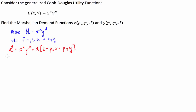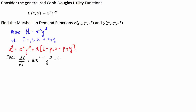So let's start with our first order conditions. The first order conditions are that the partial derivatives of the Lagrangian function equal zero. The derivative of the Lagrangian with respect to X is equal to alpha times X to the power of alpha minus 1, times Y to the beta, minus lambda times the price of X, and that equals zero.